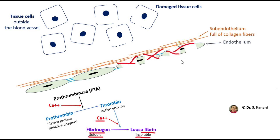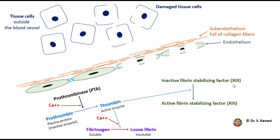At this point, we have a platelet plug blocking the damaged area, but the platelet plug is not a very strong barrier. We need a network of fibrin molecules to completely close up this section so bleeding will stop. However, when fibrin molecules first form, they are not strong — they are loose and unstable. So thrombin activates clotting factor 13, which is called fibrin stabilizing factor.